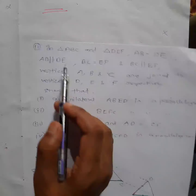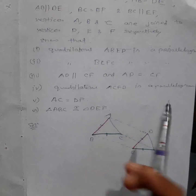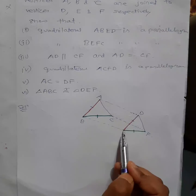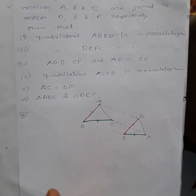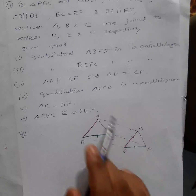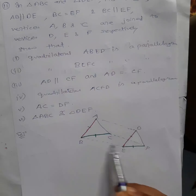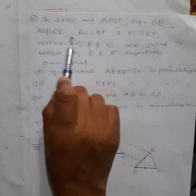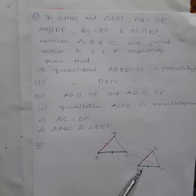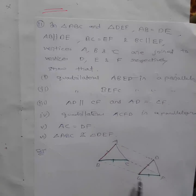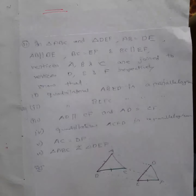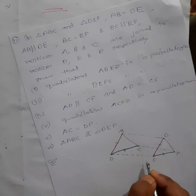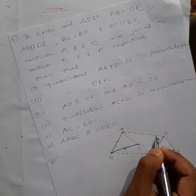In triangle ABC and DEF, the diagram is already given. They have stated AB is equal to DE — I've marked it with a red pen for clarity. These are parallel as well as equal. Next, BC is equal to EF and they are also parallel. The vertices are joined respectively, shown with dotted lines in the diagram.